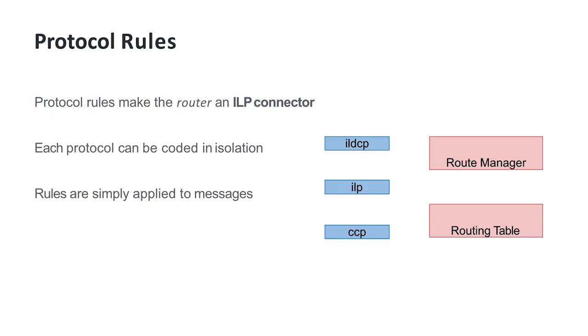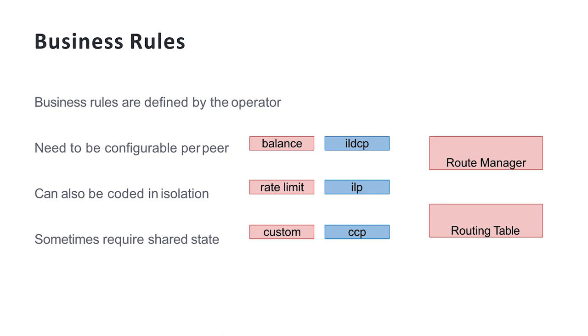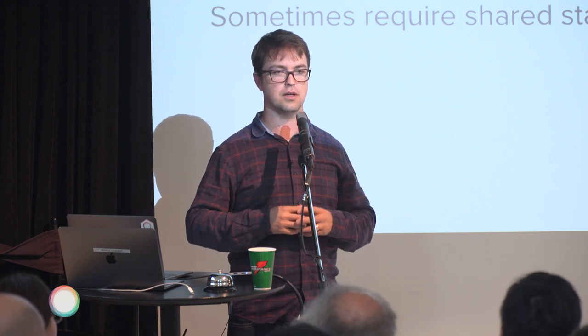We needed to turn our router into a connector, and to do that you need to add all the protocol rules. We implemented each of the protocols as a standalone module which takes a message in, applies protocol rules to it, and either spits it out the other side or rejects it. The nice thing about ILP is you have three message types: a prepare message coming in, and a response which is either a fulfillment or a rejection. All of those protocol modules can be implemented as something that takes in a prepared message, either rejects it, fulfills it, or passes it on. What came from that is that business rules are basically exactly the same — and so in the code they both implement identical interfaces, can be coded in isolation, and can be swapped in and out. You can have a rule that you apply to one peer but not to another.